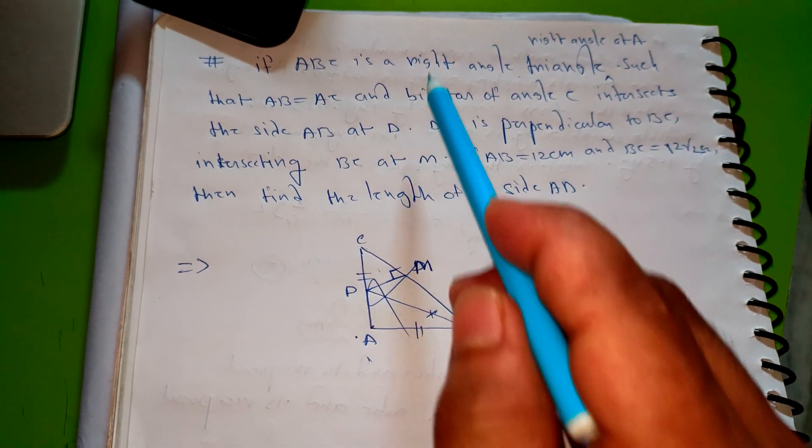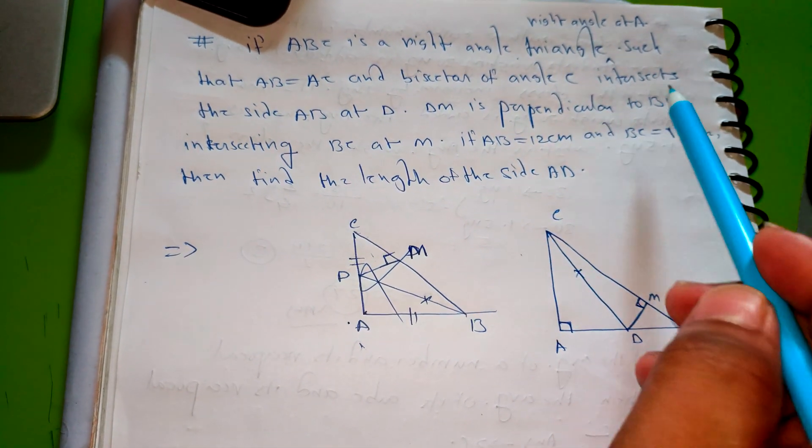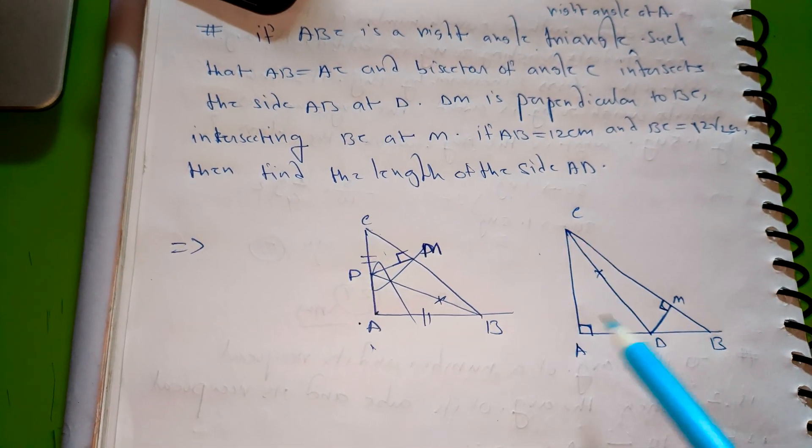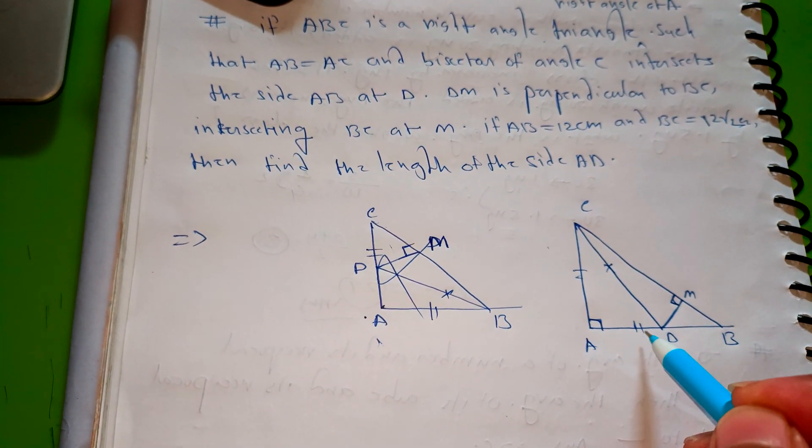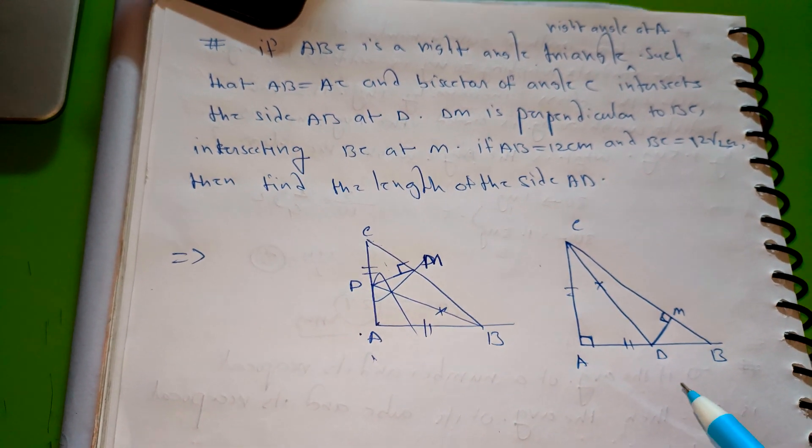If ABC is a right-angled triangle such that AB equals AC, okay.